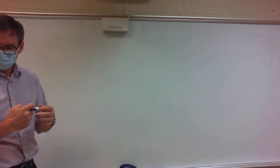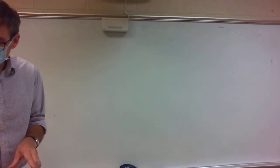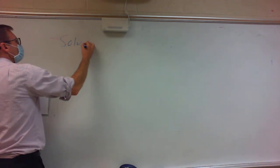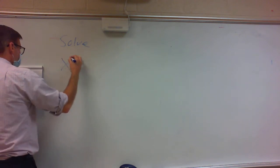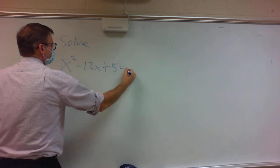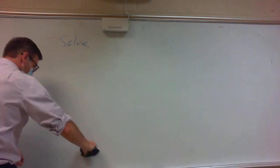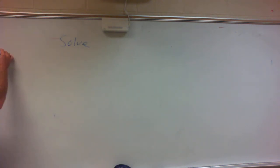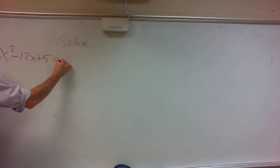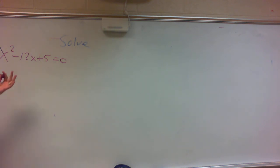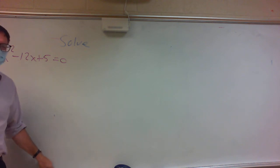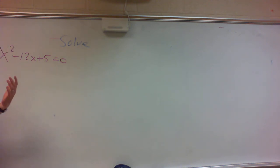Now that I've gotten the basic skills out of the way, let's solve some equations. The first equation is x squared minus 12x plus 5 equals 0. Our job is to solve this. The only way we've known how to solve this up until now is to factor it, set it equal to zero, and hope it factors. Well, guess what? It doesn't factor.